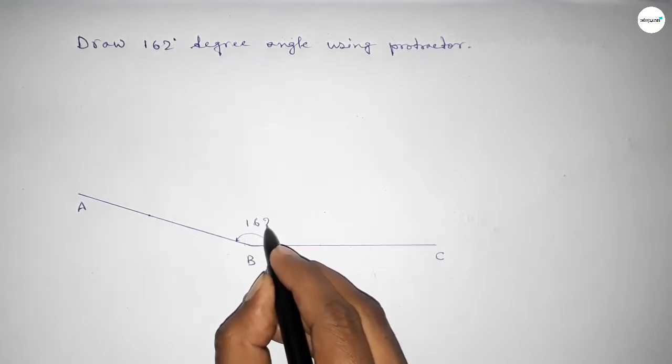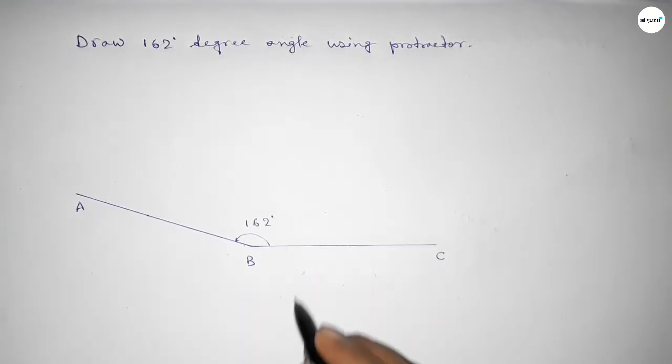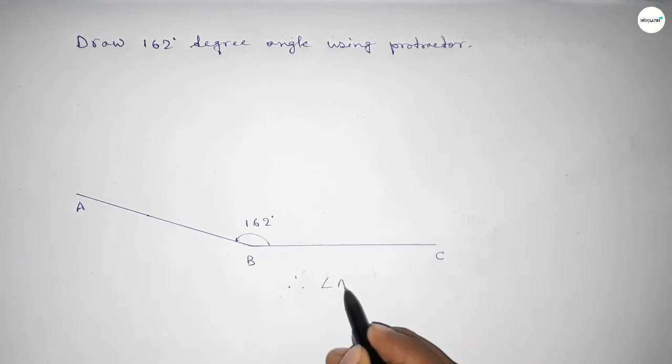Therefore, angle ABC up to this, so angle ABC equal to 162 degree angle. That's all. Thanks for watching. If this video is helpful to you, then please share with your friends.